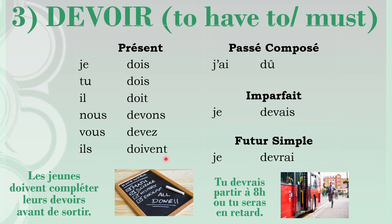In the passé composé, the past participle of devoir is dû, with a circumflex accent on the u — that's important for spelling: j'ai dû, tu as dû, and so on. In the imparfait, you take off the -ons from the nous form: je devais, tu devais, and so on. In the futur simple, the irregular root is devr: je devrai, tu devras, and so on. For the conditional, you take the same future root but attach the imparfait endings instead.